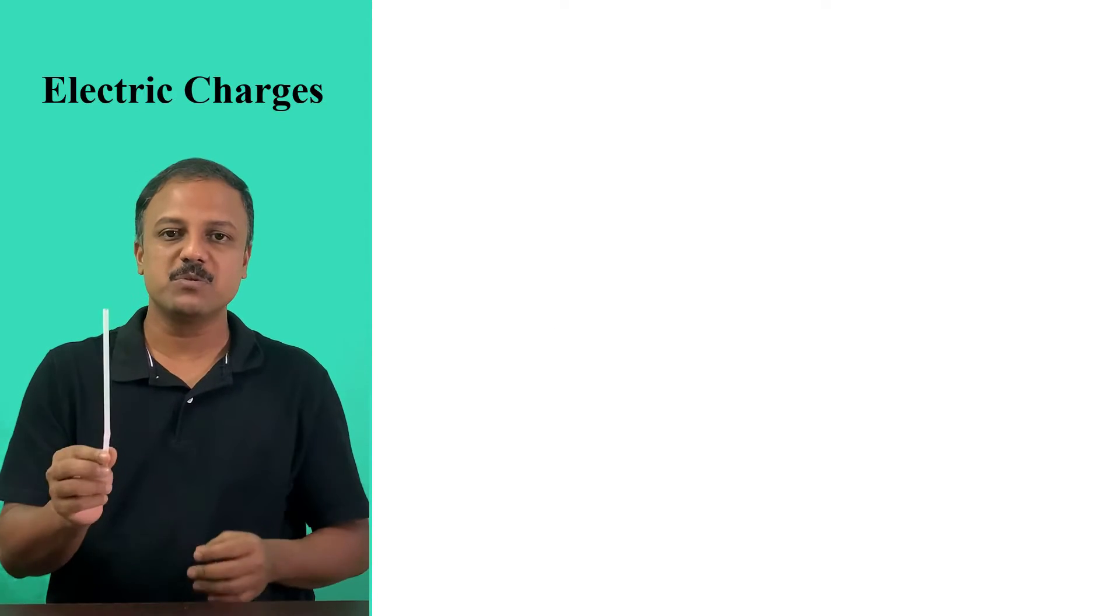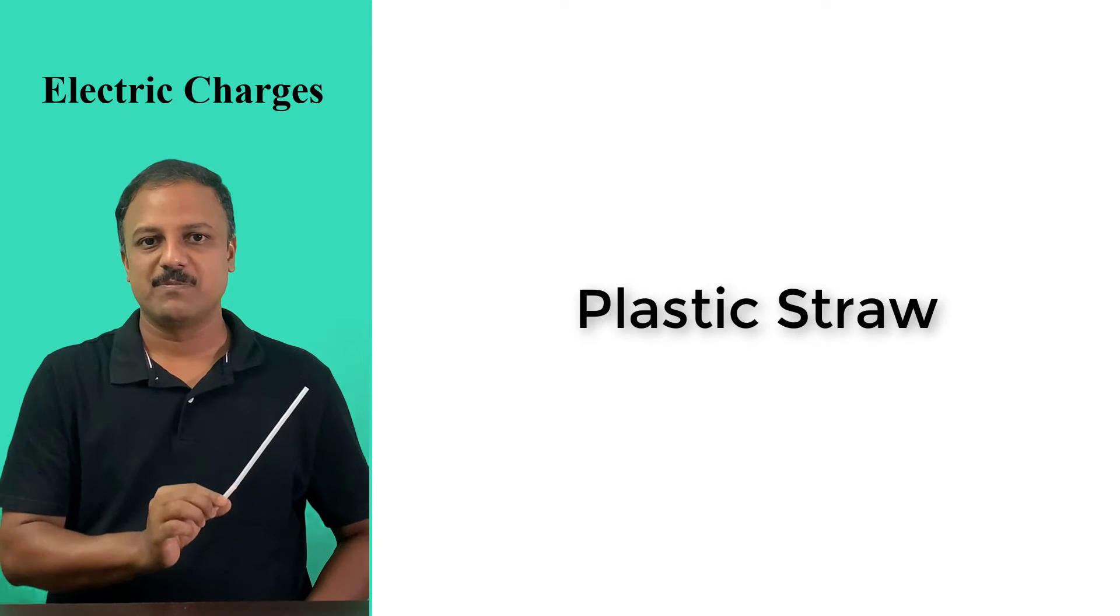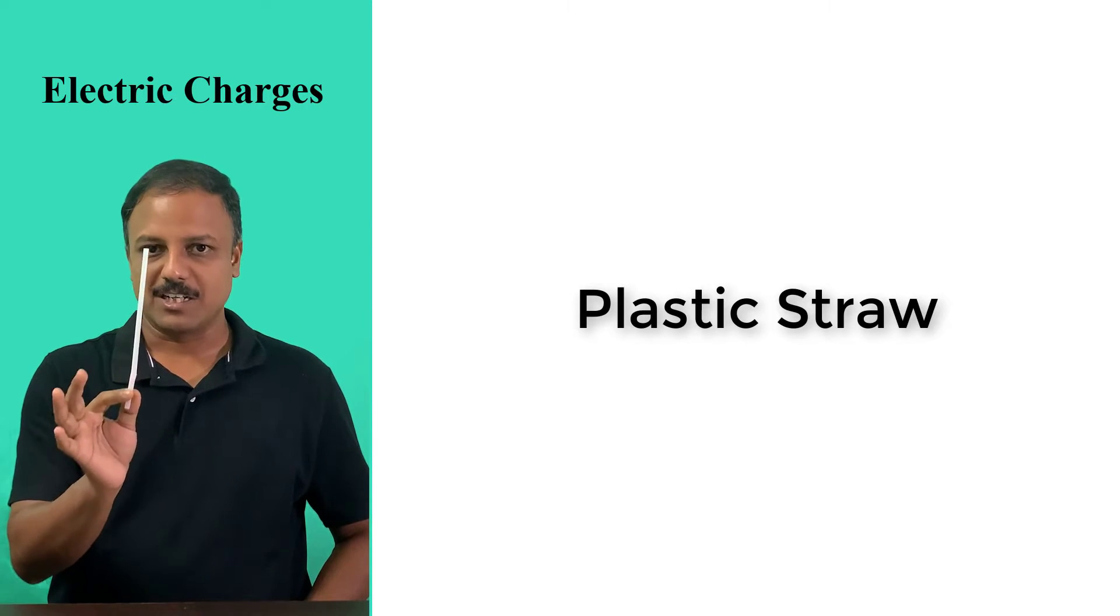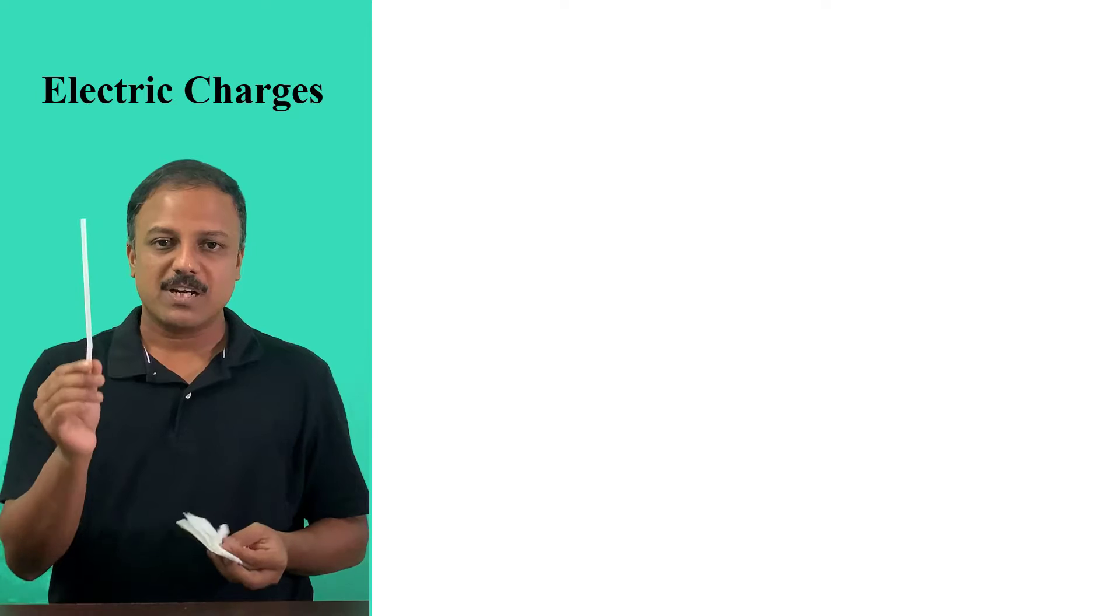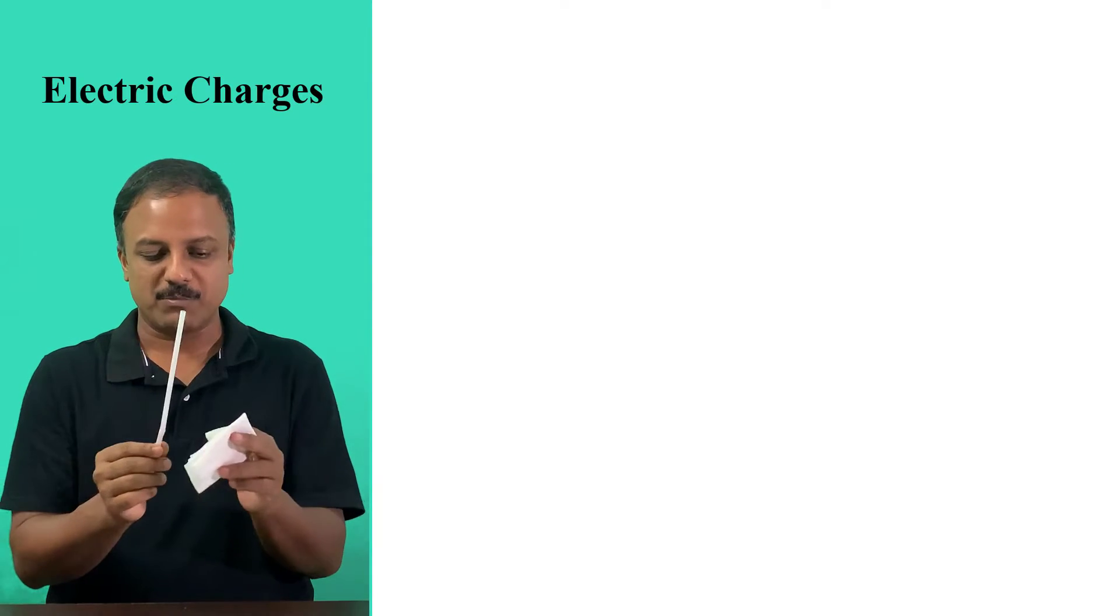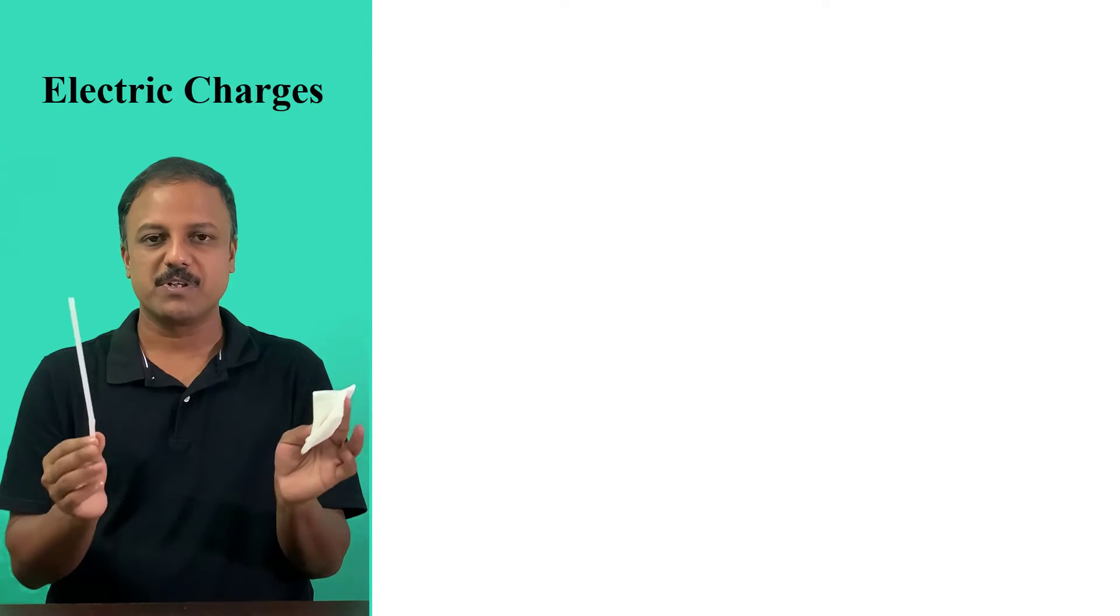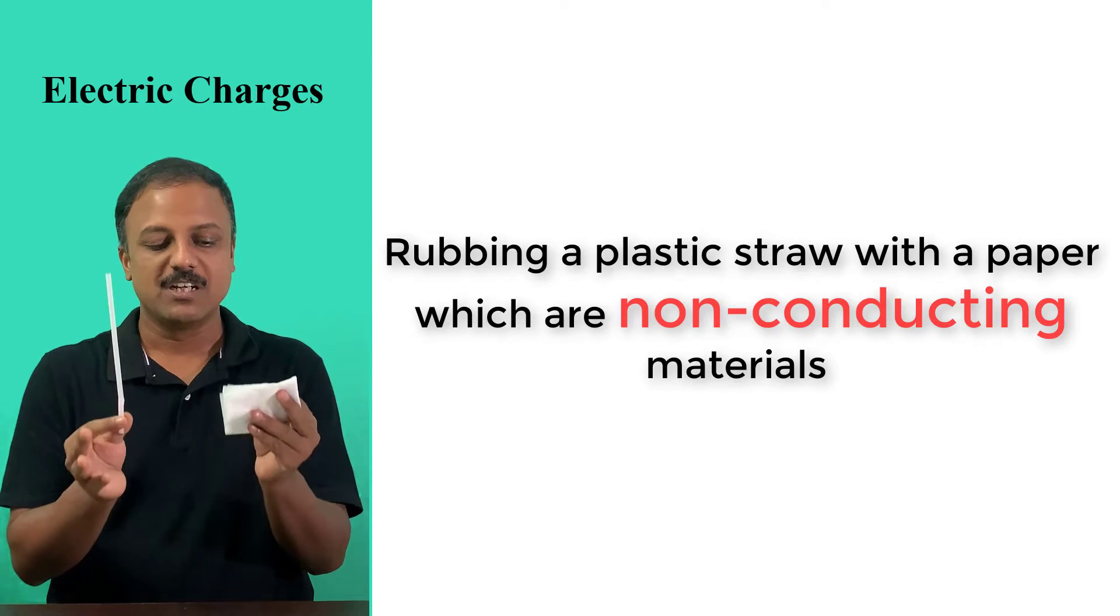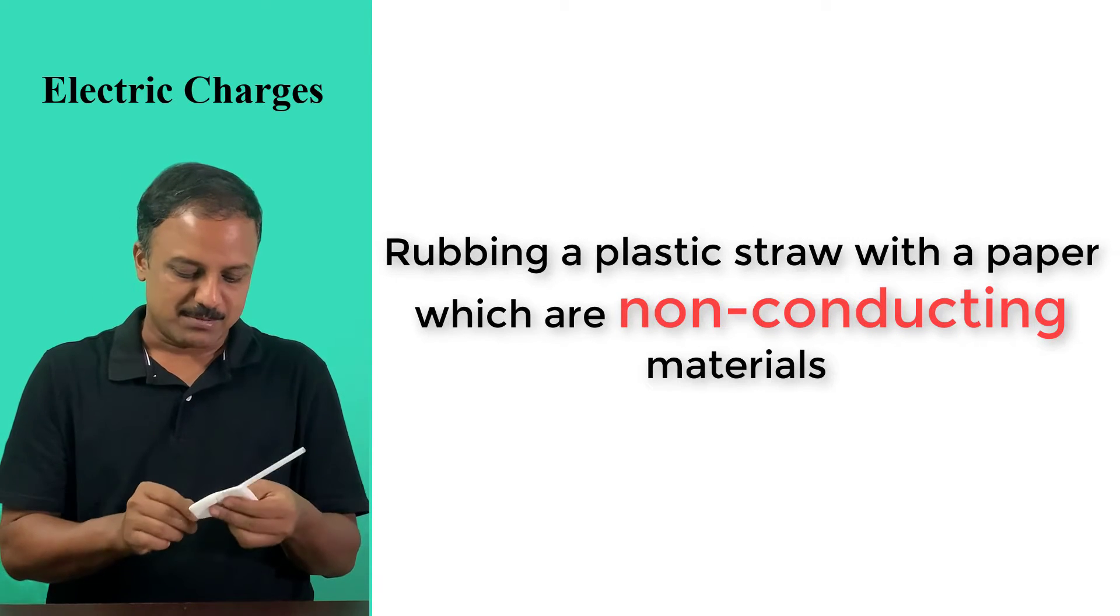And then I'm going to use a plastic straw. So this is a non-conducting material. Now when you rub this material with another non-conducting material, I'm going to use a paper and a straw. So when you rub these two materials together, what happens? Let's observe this.